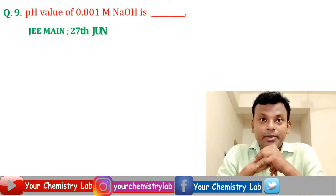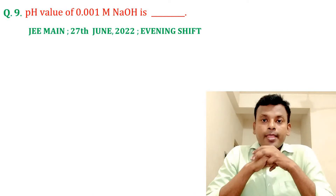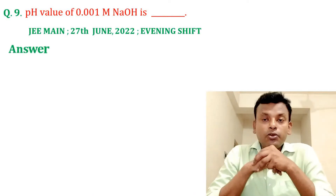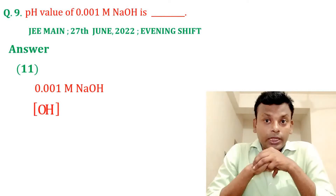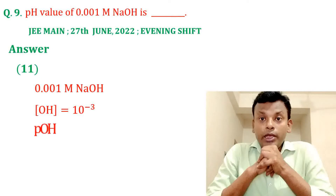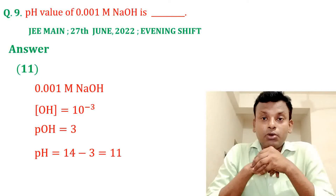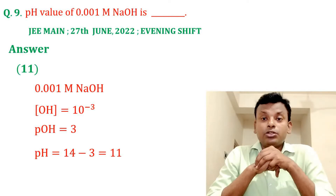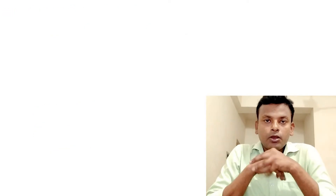Question nine: pH value of 0.001 molar NaOH is blank. This question was set in JEE Main 27th June 2022 evening shift. Answer is 11. [OH⁻] = 10 to the power minus 3, pOH = 3, pH = 14 − 3 = 11. Answer is 11.